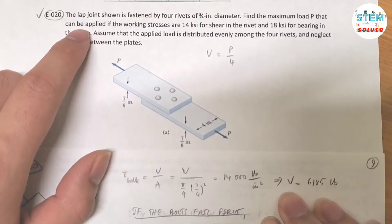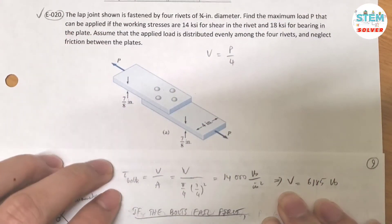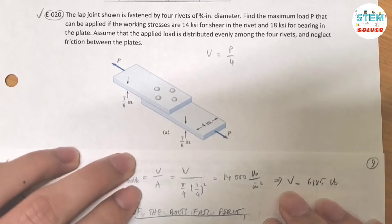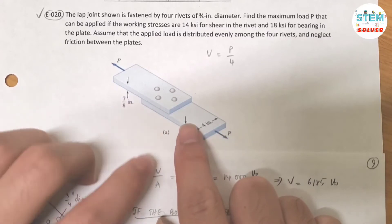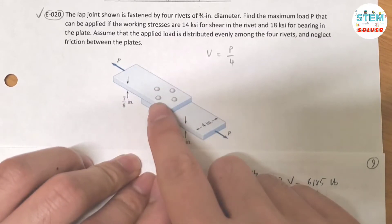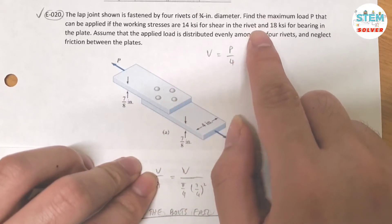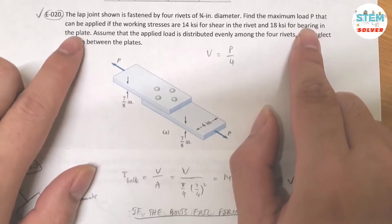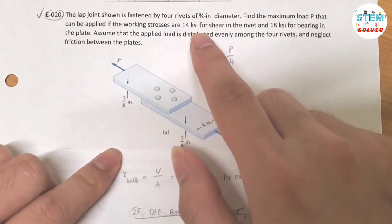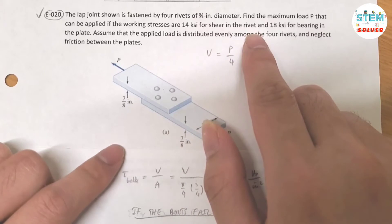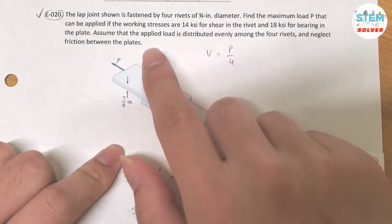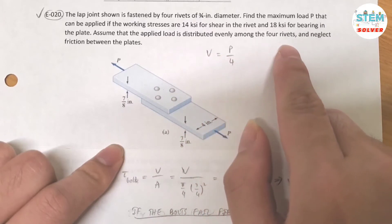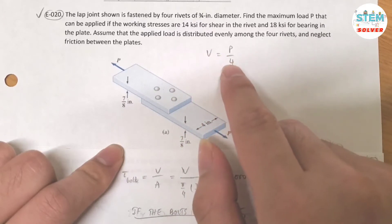Now the lap joint shown is fastened by 4 rivets of 3/4 inch diameter. You have 2 laps connected by 4 rivets. Find the maximum load P that can be applied if the working stresses are 14 KSI for shear in the rivet and 18 KSI for bearing in the plate. Assume that the applied load is distributed evenly among the 4 rivets and neglect friction between the plates.